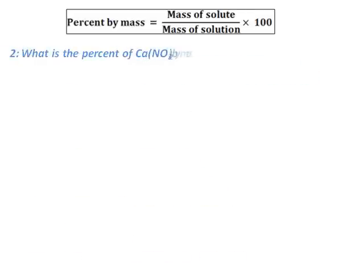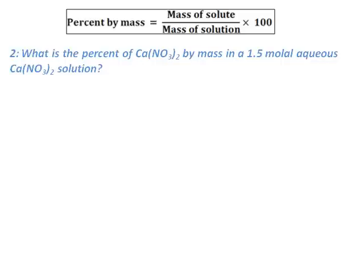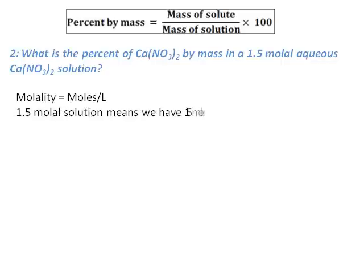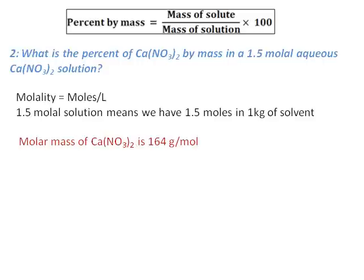What is the percent of calcium nitrate by mass in a 1.5 molal aqueous calcium nitrate solution? Molality is given and they ask you to calculate the percent by mass. Percent by mass equals mass of solute divided by mass of solution times 100. Molality of 1.5 m means 1.5 moles in 1 kilogram of solvent. The molar mass of calcium nitrate is 164 grams per mole, so mass of calcium nitrate equals 1.5 times 164, giving 246 grams.